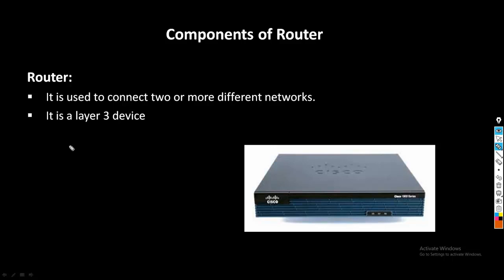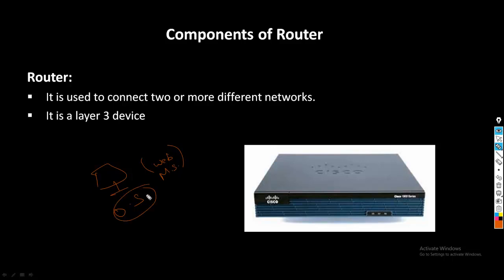A router is a layer three device, and you can see here in the diagram, this is how a Cisco router looks like. In computers, we install an operating system and run applications like web browser, MS Office, etc. But a router provides connectivity between two different networks.